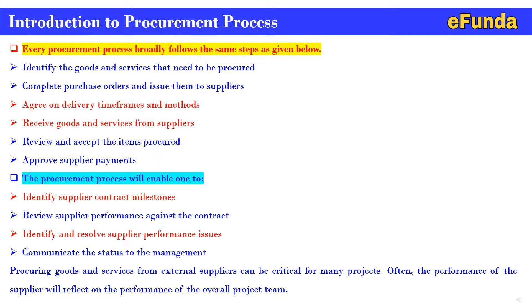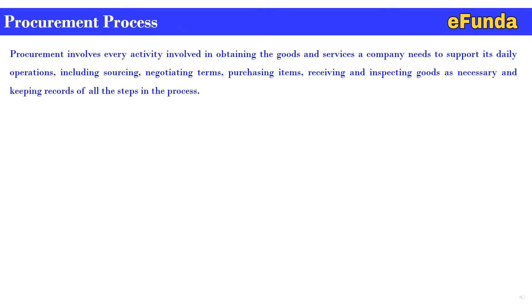This is how the introduction of the process is given. Now we will see further procurement process in detail. Procurement involves every activity involved in obtaining the goods and services a company needs to support its daily operations, including sourcing, negotiating terms, purchasing, receiving and inspecting goods as necessary, and keeping records of all the steps in the process.